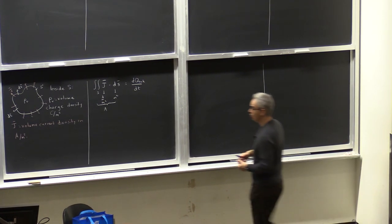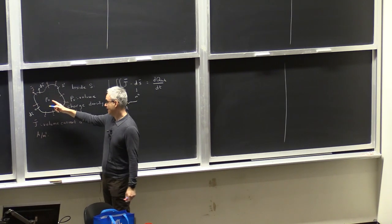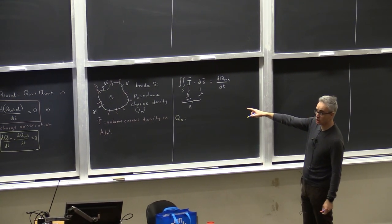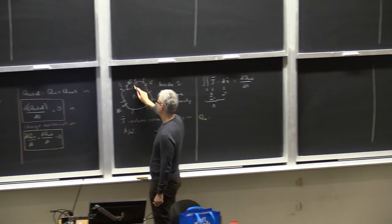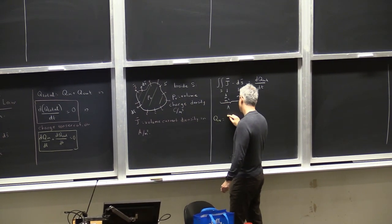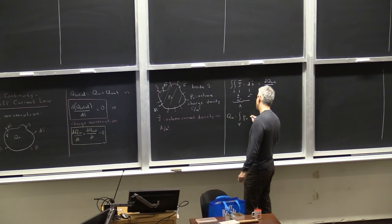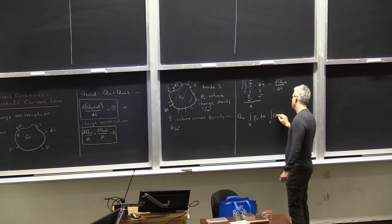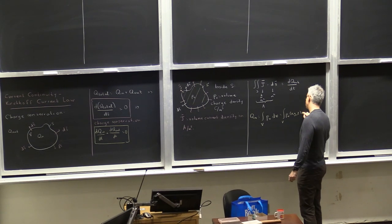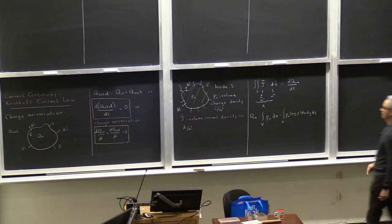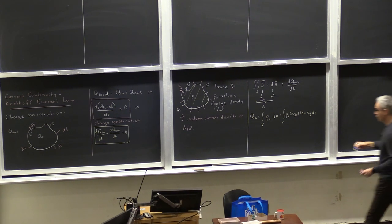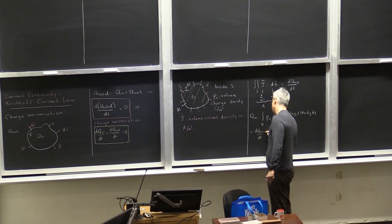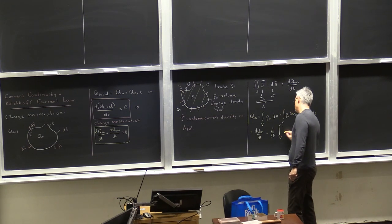We can also say something about Q_in because the charge inside the surface can be expressed in terms of the volume charge density as the integral over the volume: Q_in = ∫ρ_v dV. Integrating over Cartesian coordinates gives the total charge, and therefore dQ_in/dt is the time rate of change of this volume integral.